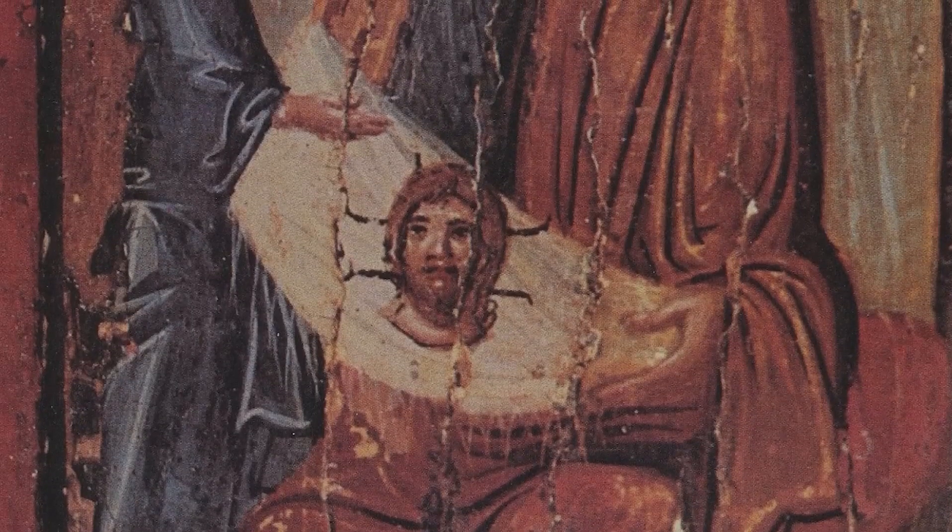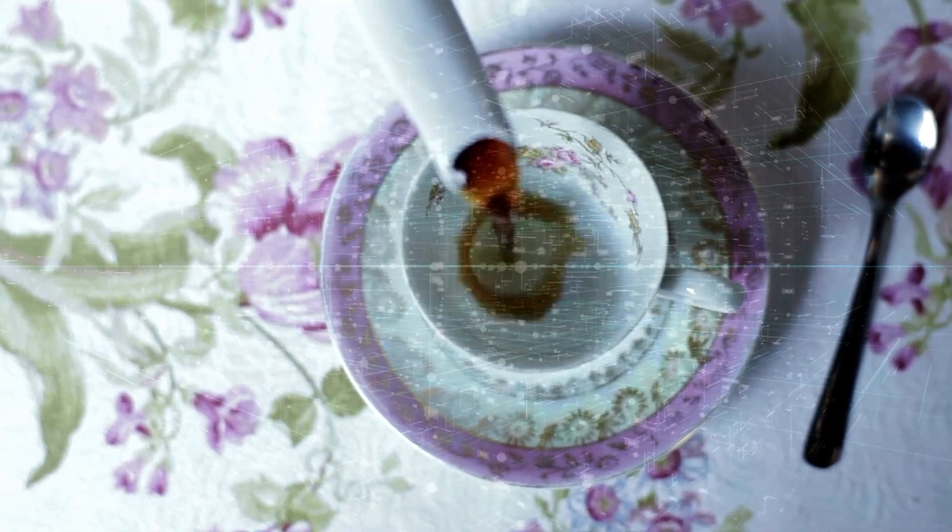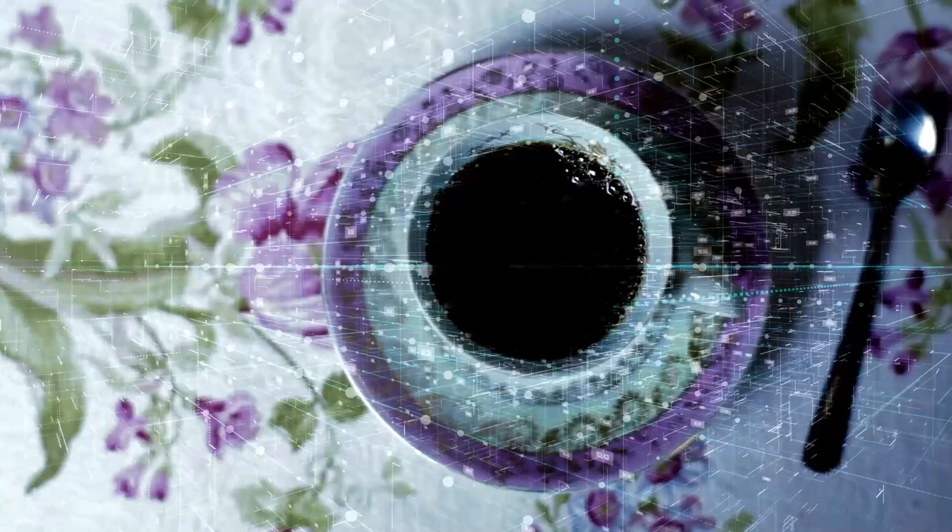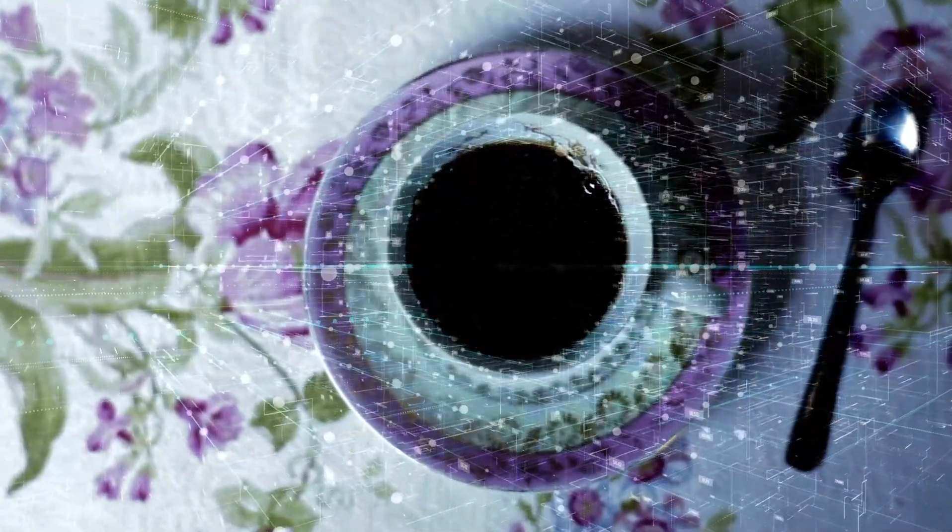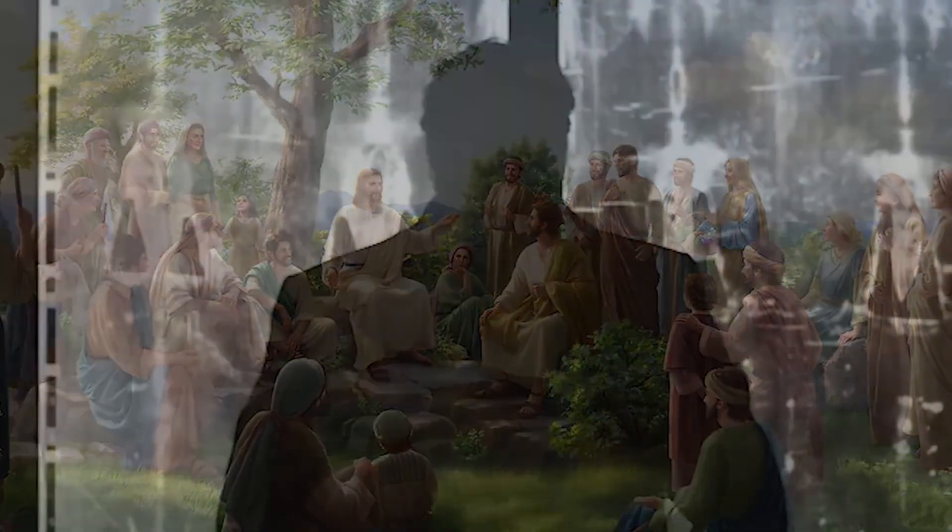If someone had forged this, they would have had to brutally torture and kill a man to create it. But history offers no record of such an act because this isn't a forgery. And there's more. The blood type is AB positive, the rare blood type found most commonly among Middle Eastern men. Both the Shroud and the Sudarium contain this exact same rare blood.